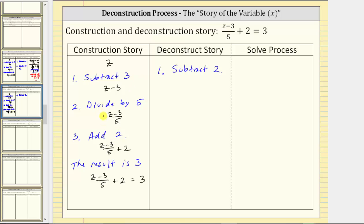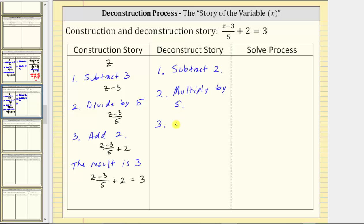Step one of the deconstruction is subtract two. The previous step in the construction was divide by five, which means step two in the deconstruction story is the operation that undoes dividing by five — multiply by five. And then the last step in the deconstruction story is the opposite operation of the first step in the construction story. To undo subtract three, we add three. So step three in the deconstruction story is add three.